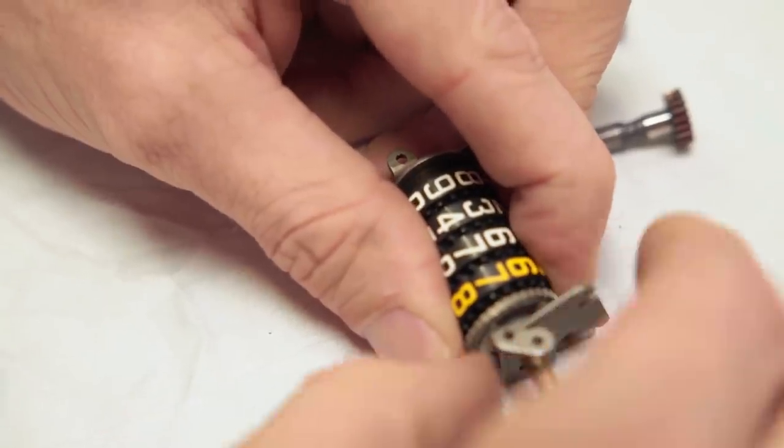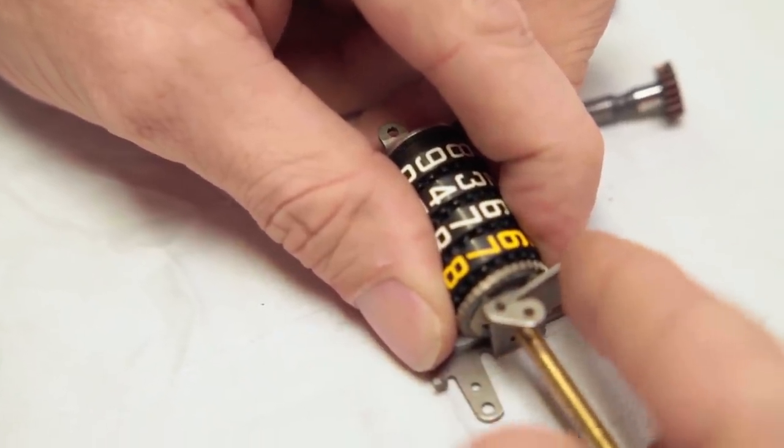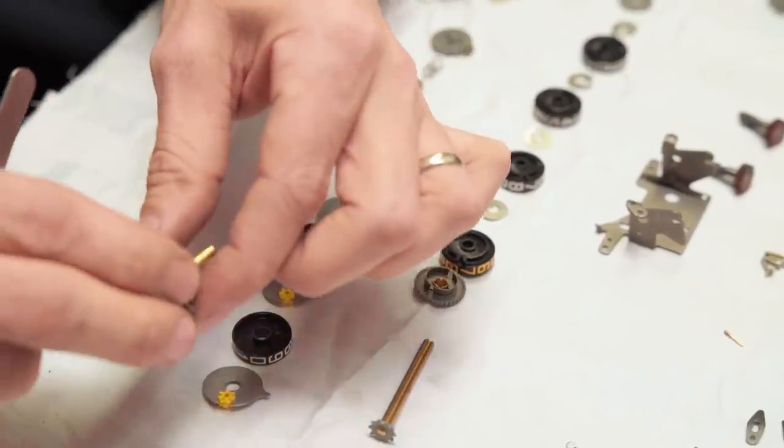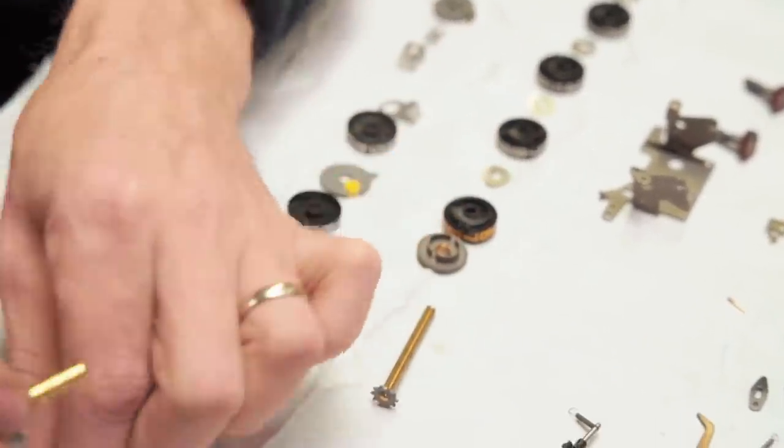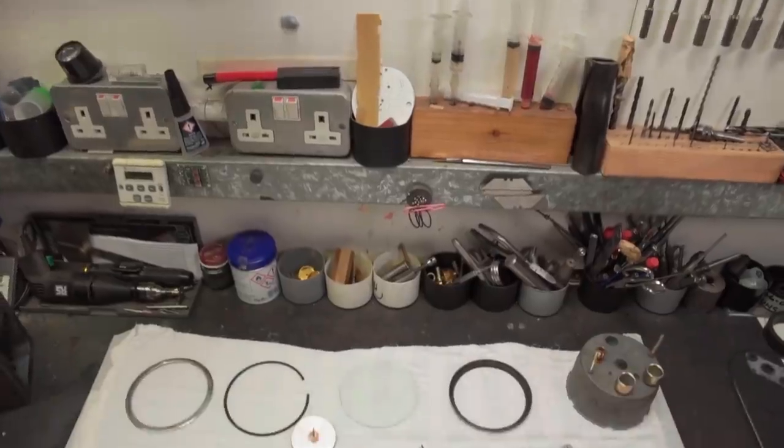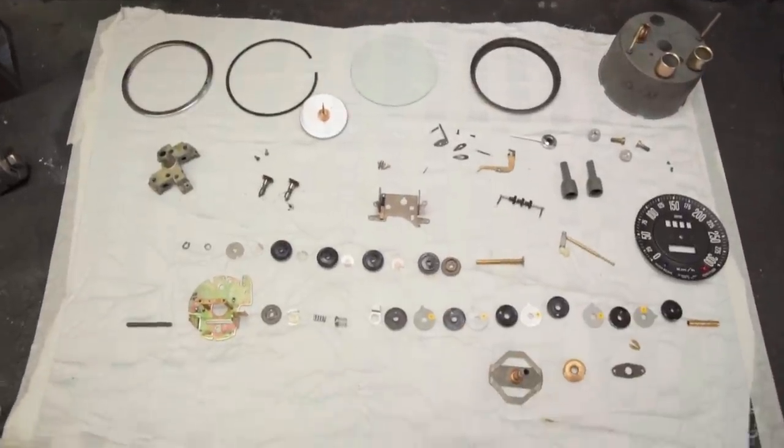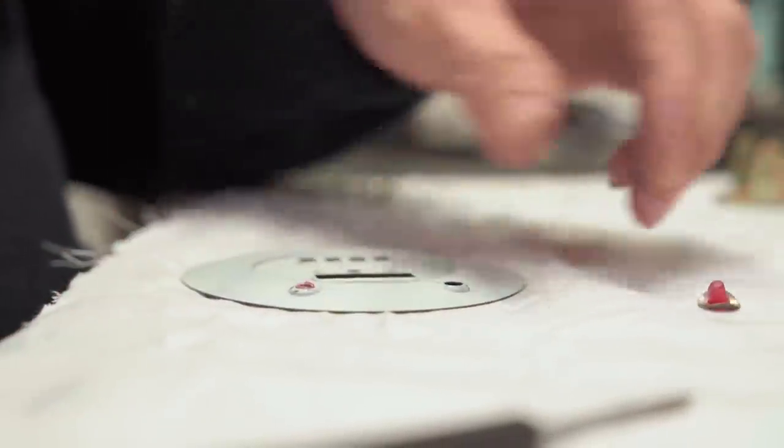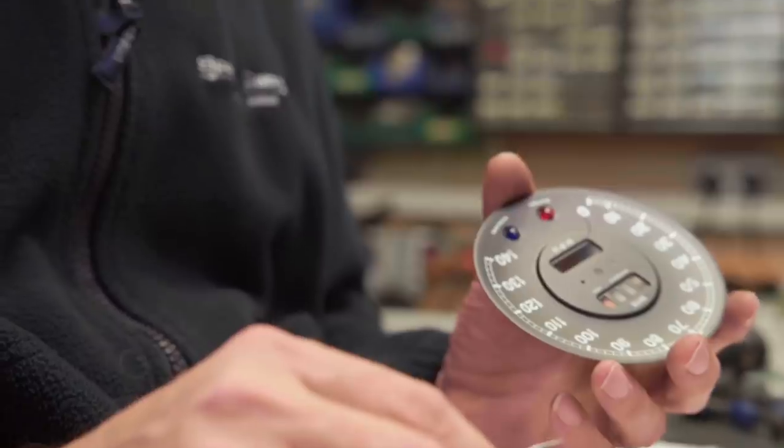Then we can separate the trip counter assembly. This facet, which passes light for the warning lights, has gone cloudy, so we're going to cut it off.